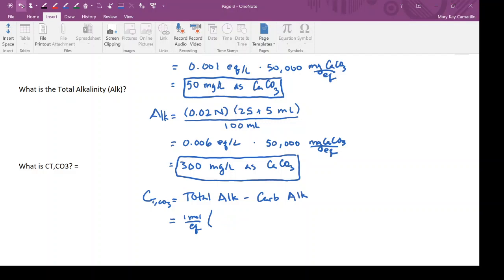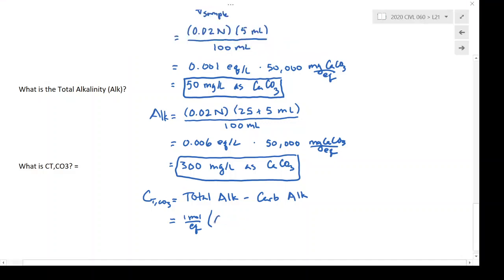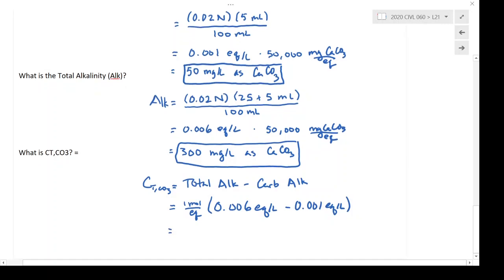as the equivalents. So I have 0.006 equivalents per liter minus 0.001 equivalents per liter, and I am left with 0.005 moles per liter.